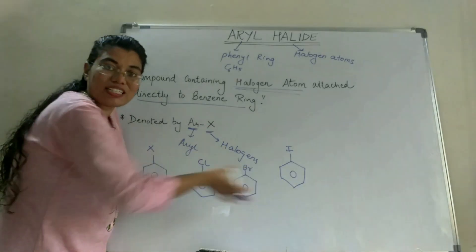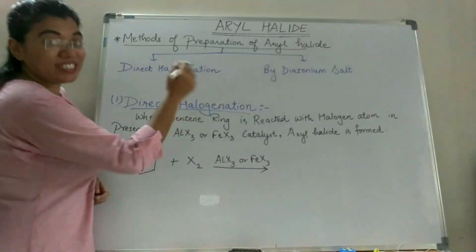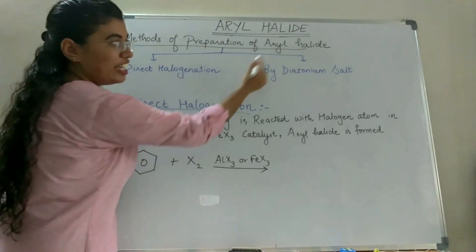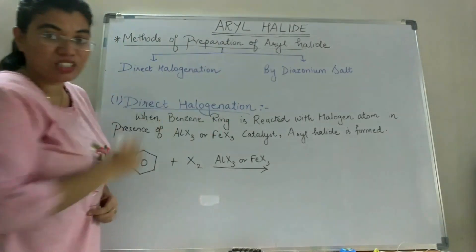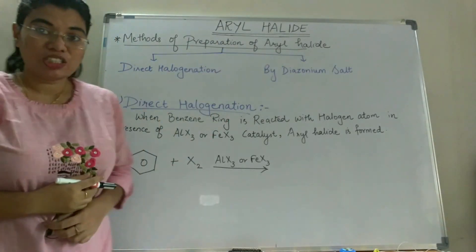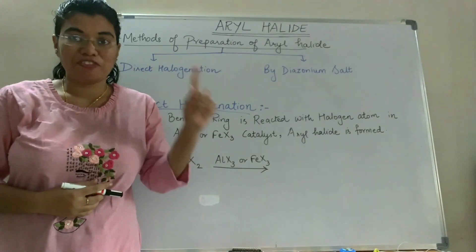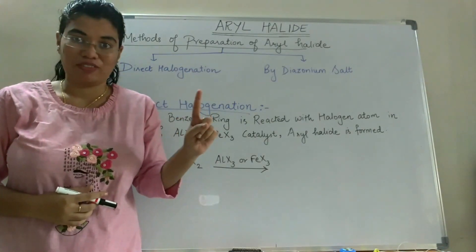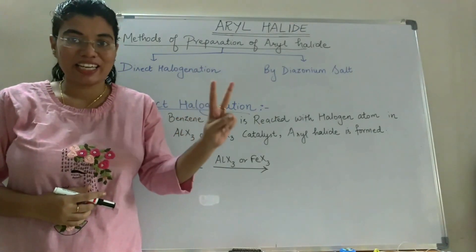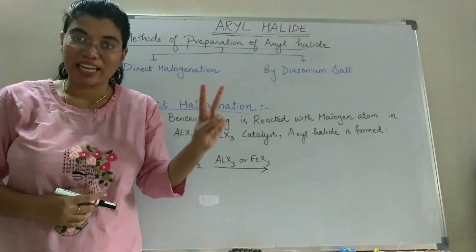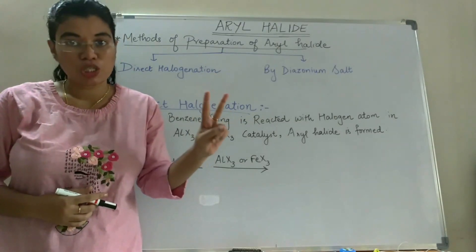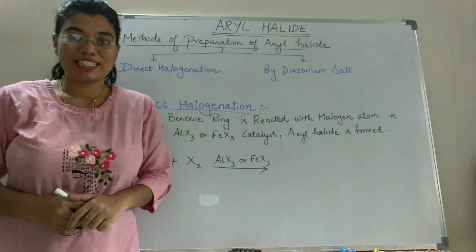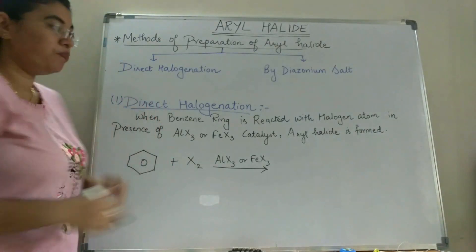Now let's see the methods of preparation of Aryl Halide. There are two methods. The first one is by direct halogenation method, and the second one is by the diazonium salt. So let's look at the first method — that is the direct halogenation method.